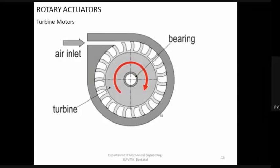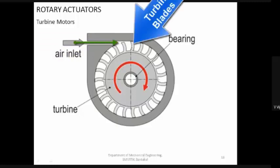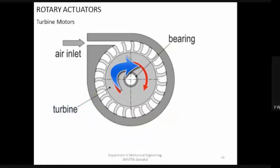Turbine motor is a kind of pneumatic motor in which instead of having vanes, you will have something called a turbine. This turbine is very similar to a Pelton wheel and other turbines used in water power generation. The high pressure air enters into the turbine casing and impacts against the vanes or blades of the turbine. Because of this impact, the energy of the air is transferred to the turbine blades, and since the turbine blades are mounted on the rotor, the turbine rotates and you get rotary motion. The main advantage of the turbine motor is you can generate very very high speed.